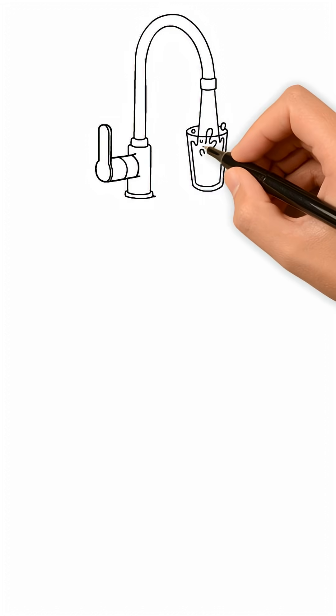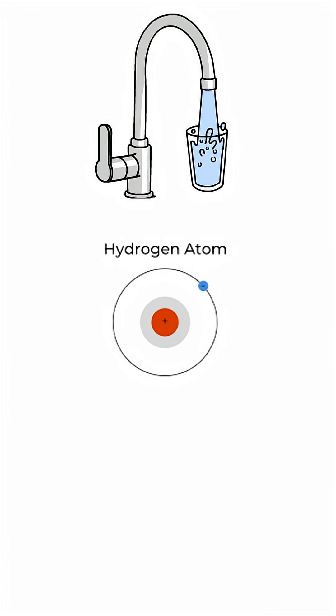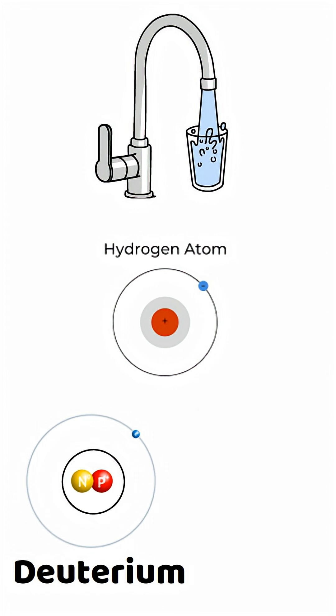It looks like normal water, but check this out. Normal hydrogen has just a proton, but heavy water's hydrogen, called deuterium, has a proton and a neutron.